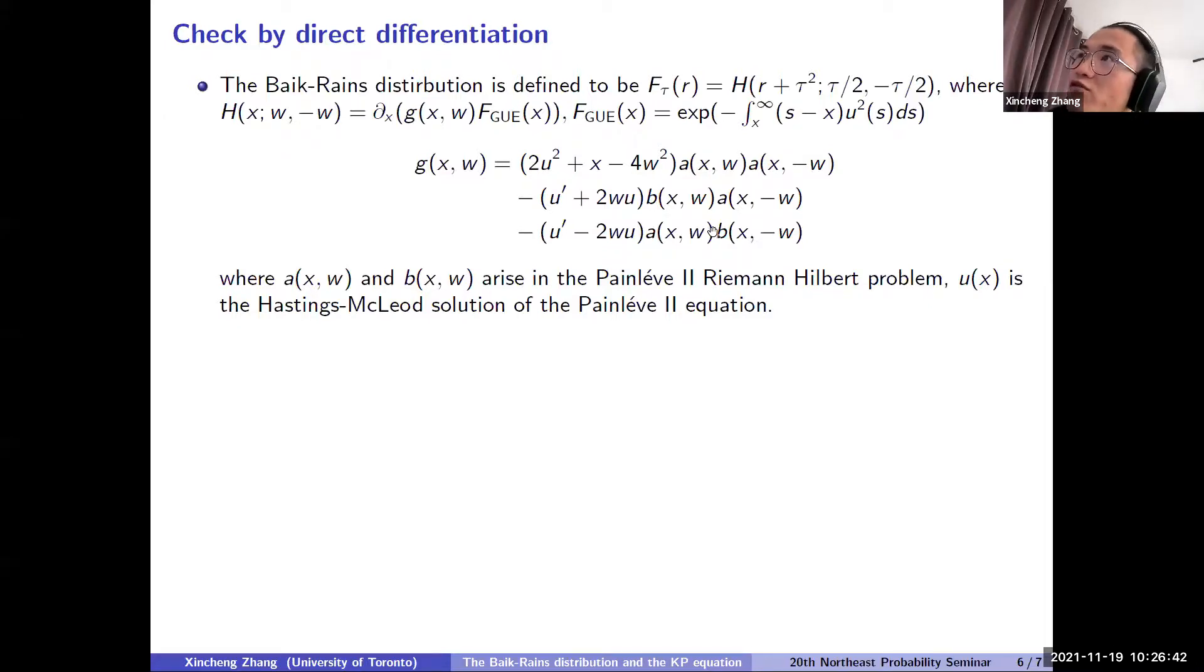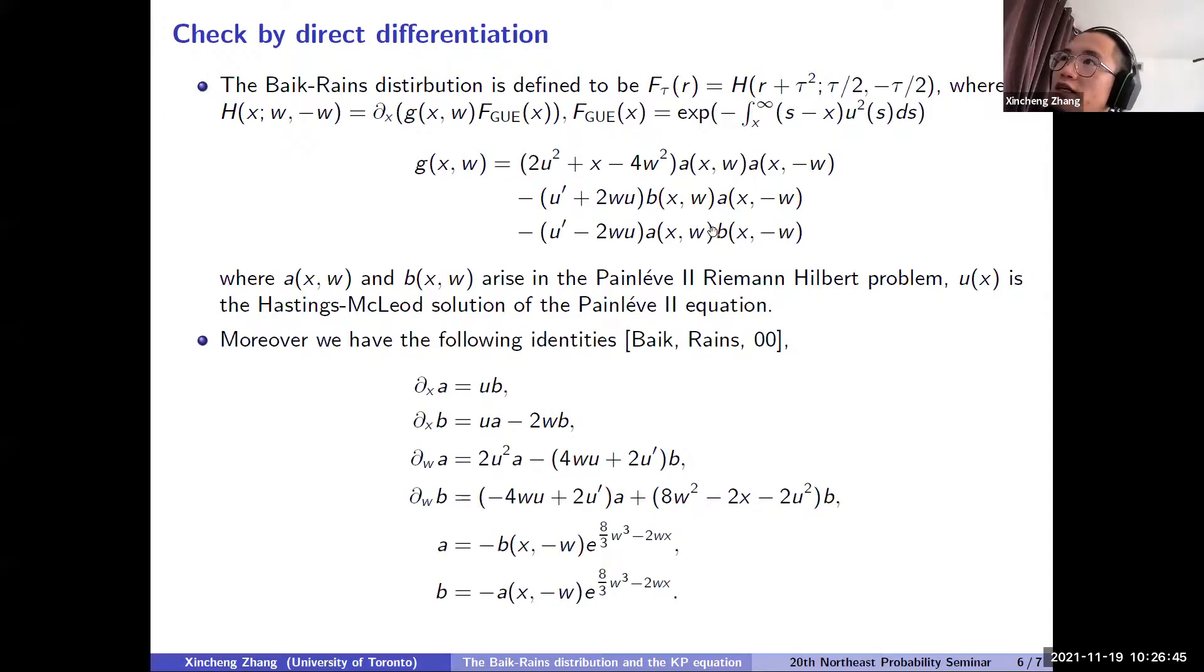in the Painlevé II Riemann-Hilbert problem. And this variable U(X) is the Hastings-McLeod solution of the Painlevé II equation. Okay. So for function A and B, we have the following good identities, which are given in the same paper where they defined Baik-Rains distribution. So you can look at the partial derivative in X of A and B in X and W. So they just behave very well. So for example, the partial derivative of A in W is some variable times A minus some variable times B. So you should think of X,W as variables here and A and B are functions, and they just behave recursively well. And also you have a transformation rule for A and B with A(X-W) and B(-W).